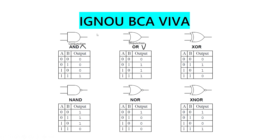Next type is Conjunction, represented by an inverted V symbol, and is called the AND gate. If both inputs are true or 1, the output will be true. Otherwise, if either is 0, the output will be 0 or false.